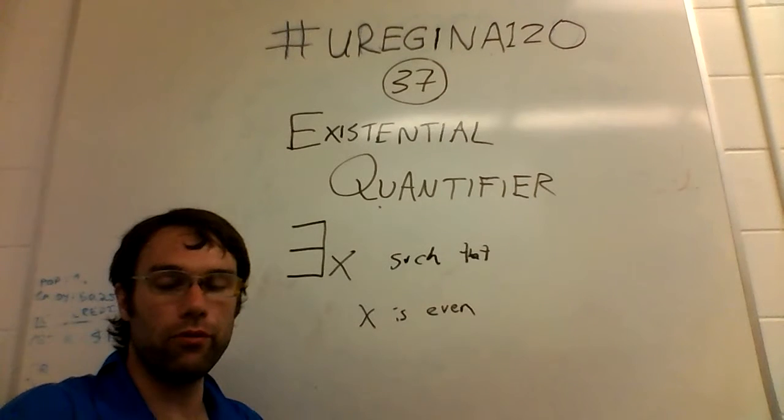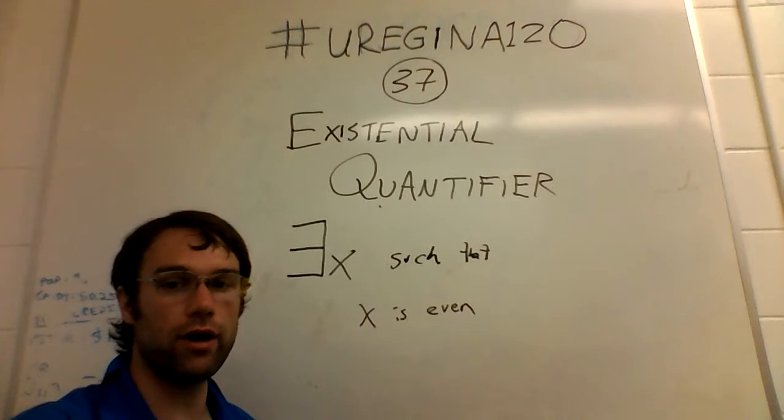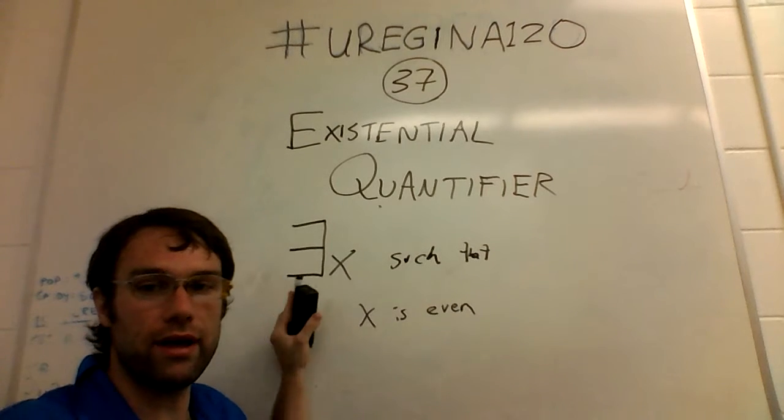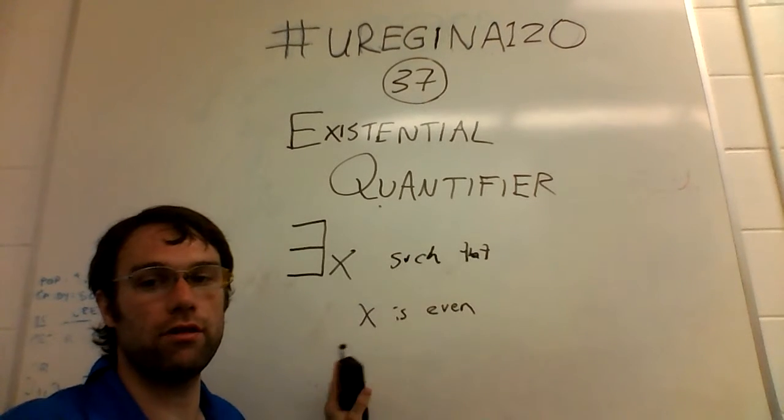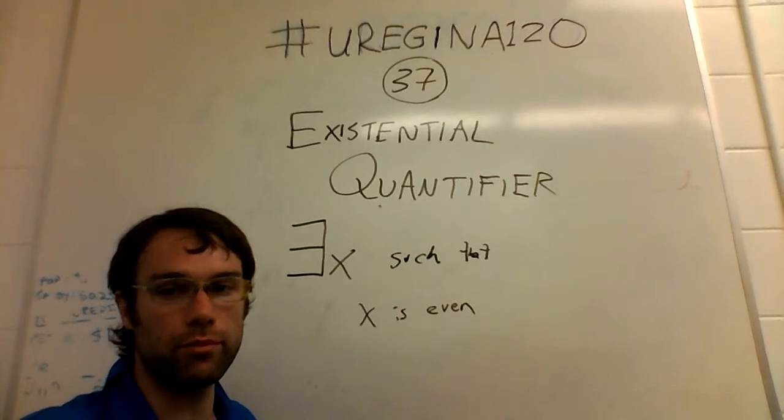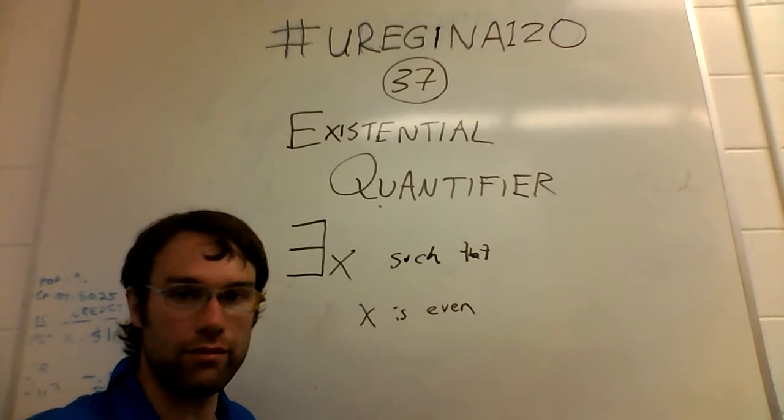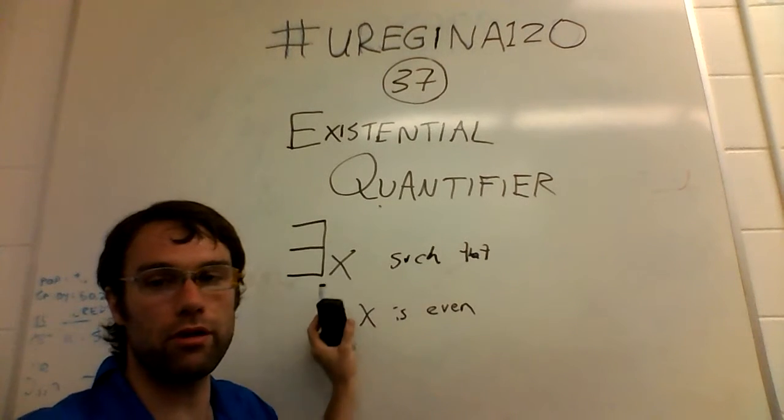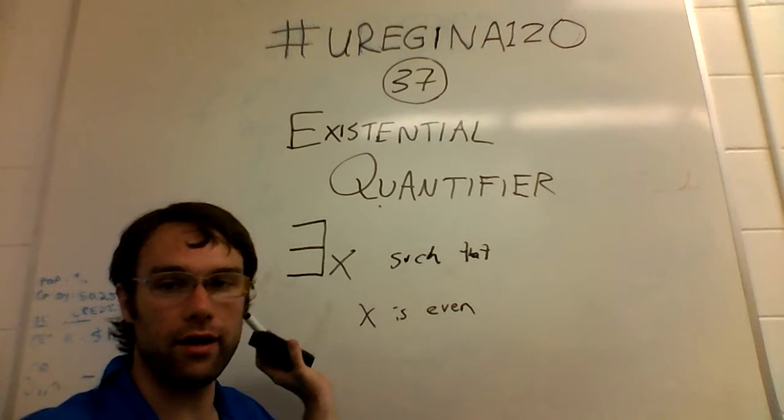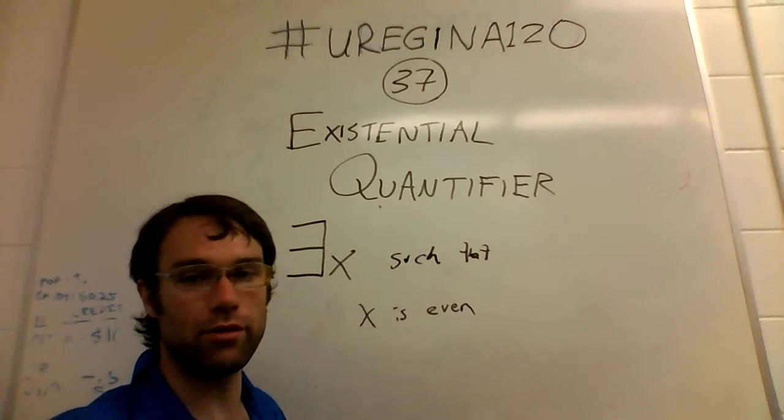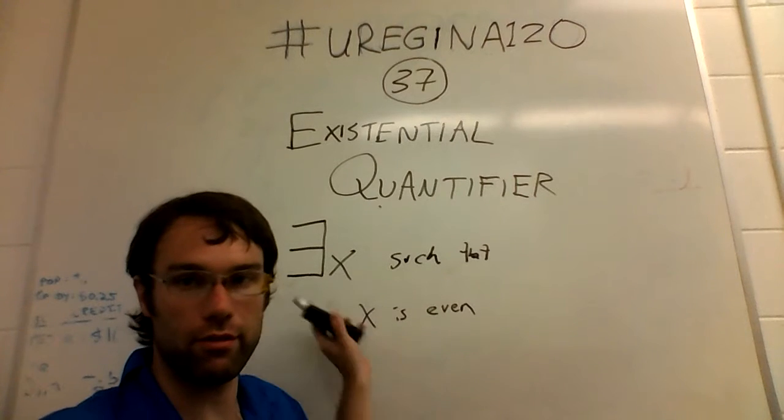Remember from the last video, one of the examples you could talk about is all even numbers. This is going to be true, if there exists some X such that X is even. So there exists at least one even number, which is true. There are many even numbers, 2 is an even number, 4 is an even number. But this is going to be true or false depending on this condition, and this condition in this case is that there's an even number that exists, and of course there is, so this is going to be true.